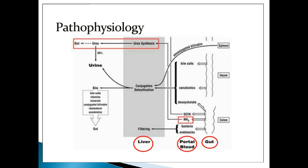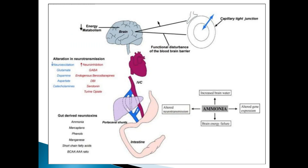It occurs very quickly in a very short time. Other toxins are also implicated besides ammonia — for example, mercaptans and other proteinaceous by-products, and endogenous benzodiazepines, etc. These are other theories as well. The most acceptable theory is ammonia: it crosses the blood-brain barrier and depresses all functions of the brain.